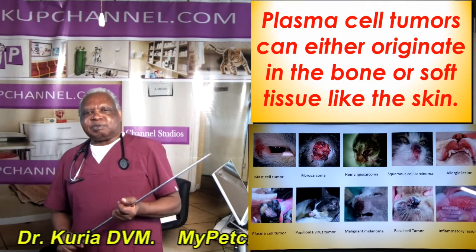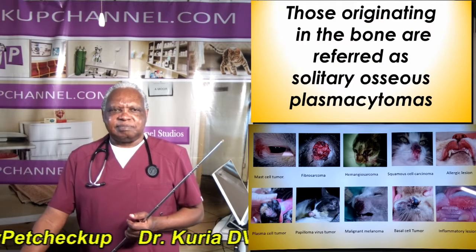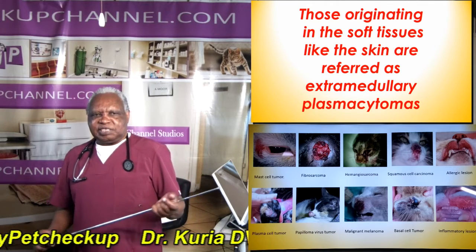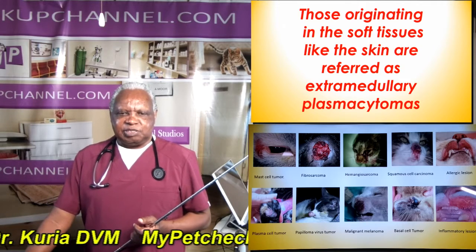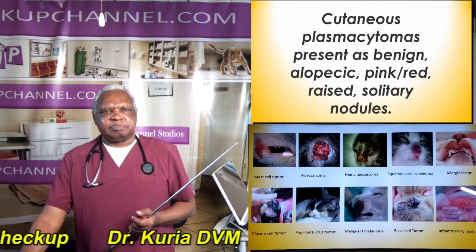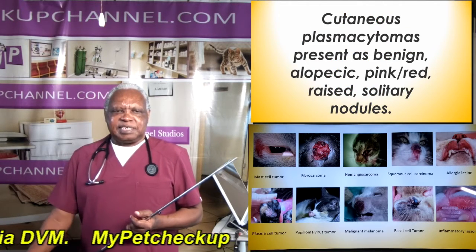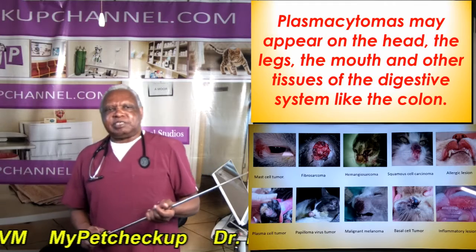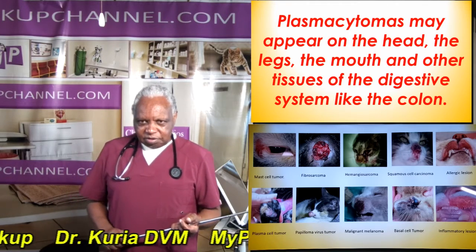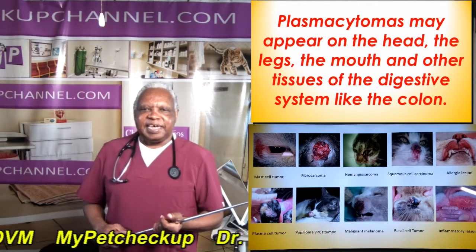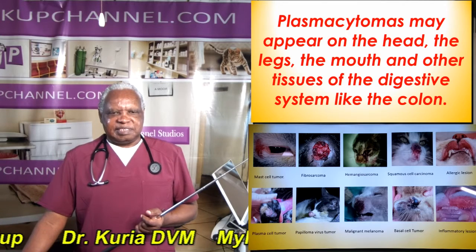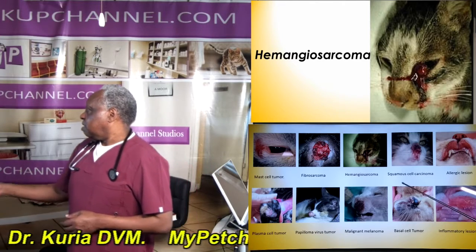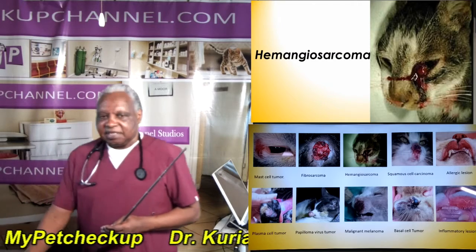Plasmacytoma tumors can either originate in the bone or soft tissue like the skin. Those originating in the bone are referred to as solitary osseous plasmacytomas, and those originating in the soft tissue like the skin are referred to as extramedullary plasmacytomas. Extramedullary plasmacytomas present as benign, alopecic, pink or red raised solitary lumps. Plasmacytomas may appear on the head, the legs, the mouth, and other tissues of the digestive system like the colon, as well as affecting the eye and the conjunctiva.